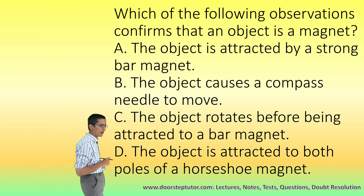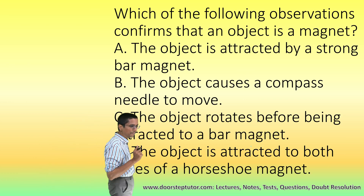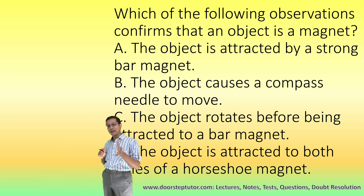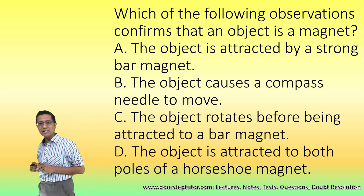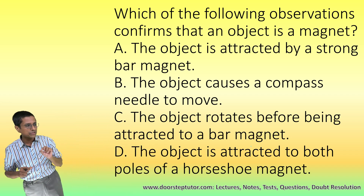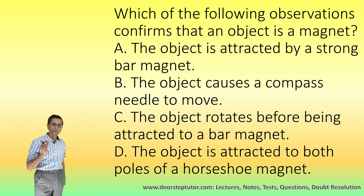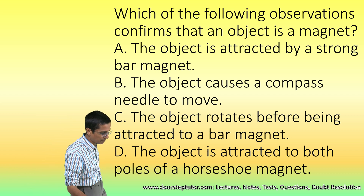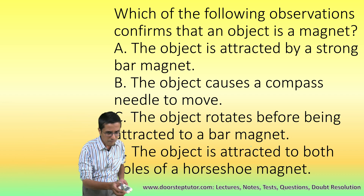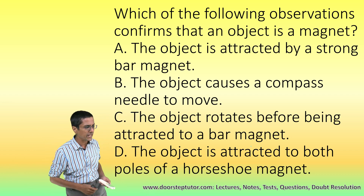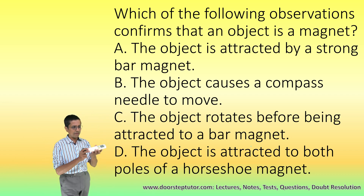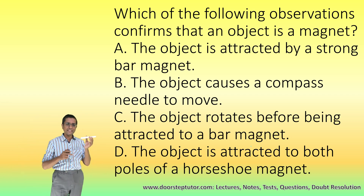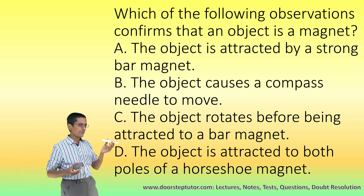Now this is the second problem. We have been asked to find out what observation would cause you to conclude that an object is a magnet. Here we have our object and our magnet. Look at choice C.